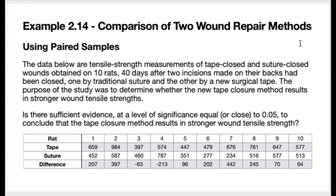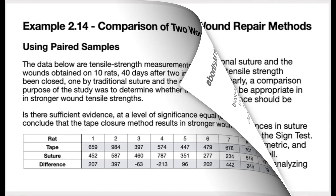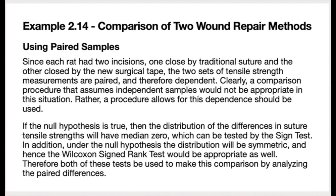The data are tensile strength measurements of tape-closed and suture-closed wounds obtained on 10 rats, taken 40 days after two incisions were made on their backs — one closed by traditional suture and the other by a new surgical tape. The purpose of the study was to determine whether the new tape-closure method results in stronger wound tensile strengths. We have tensile strength measurements for both the tape-closed and suture-closed wound for each of the 10 rats, along with the difference: tape tensile strength minus suture tensile strength.